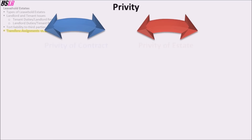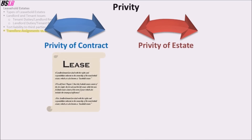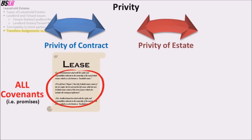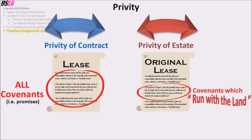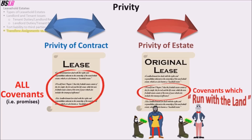The reason it is important to know whether privity of contract or privity of estate applies is that under privity of contract, the parties can sue one another for all the covenants in the lease. Under privity of estate, the parties can only sue one another for the covenants in the original lease which run with the land. Some examples of covenants that run with the land are promises to pay rent, pay taxes, and make repairs.